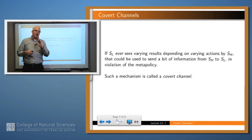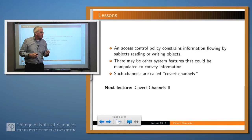So I would make the following claim. If a low-level subject ever sees varying results depending upon varying actions by a high-level subject, then the two can collude to send a bit of information from high to low using that mechanism. And we call this a covert channel. An access control policy constrains information flow by controlling who can read and write objects. But there may be other system features that could be manipulated to convey information. Such channels are called covert channels, and we're going to investigate that much more in our following lecture. Thank you.